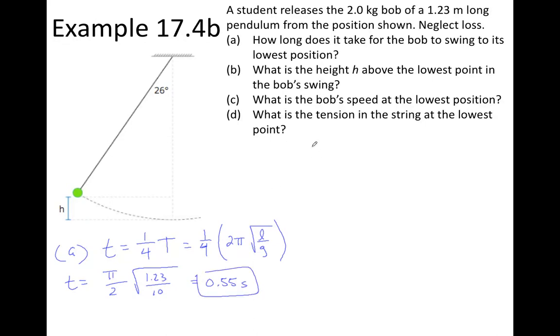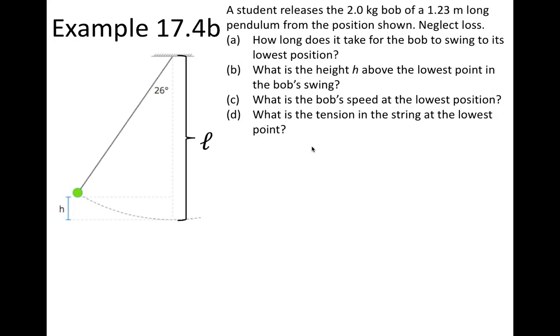Now, part B wants us to find the height h above the lowest point of the bob's swing. So for that, we're going to need a little bit of a diagram here. So I'm going to take the length of the pendulum to be L, and we're looking for that distance h. And you can see here we have this triangle. Now, this triangle will have two sides that we're interested in. This side that I'll just call x, and this side that's the length of the pendulum.